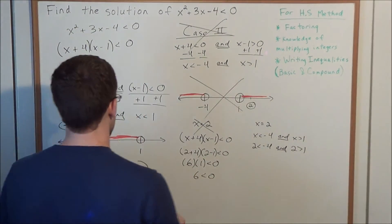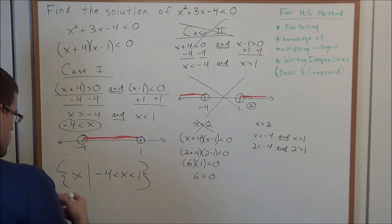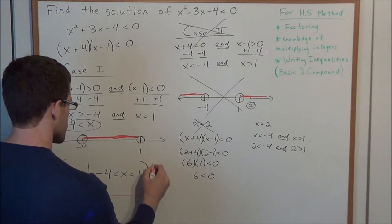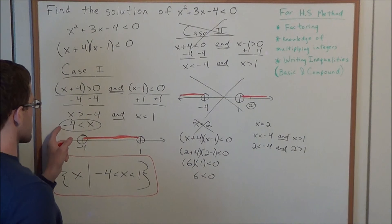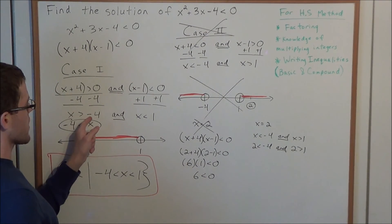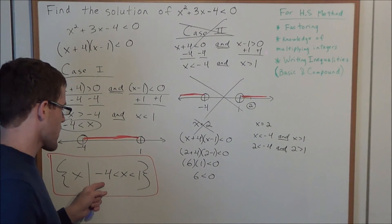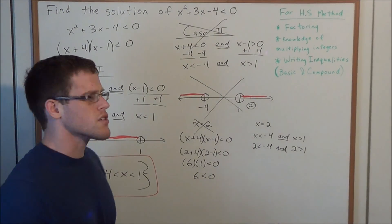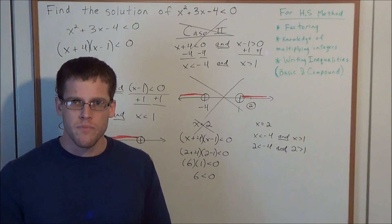Altogether, we can cross case 2 off. Our final solution is the solution set from case 1: all values x such that x is greater than negative 4 and x is less than 1, which worked out to the compound inequality negative 4 is less than x, which is less than 1. Okay, well this is going to conclude this problem as well as this video. Thank you all for watching, and I hope it was helpful.